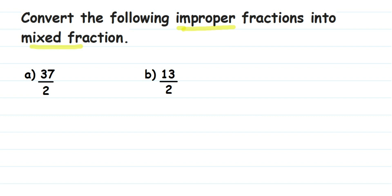In a mixed fraction we have a whole number and a fraction. To convert, we just do a normal division and then place the numbers. In the first question, you can see the numerator is greater than the denominator, so it's an improper fraction.